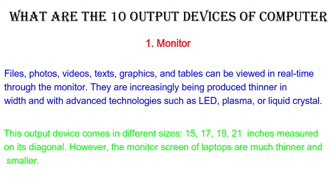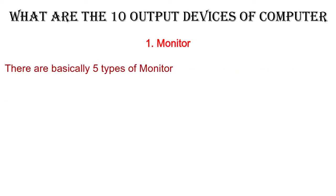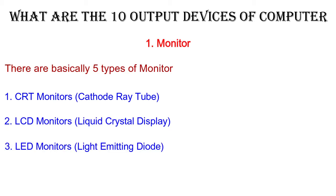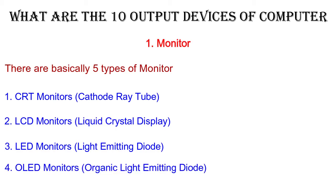The monitor screen of laptops is much thinner and smaller. There are basically 5 types of monitors: 1. CRT monitors (Cathode Ray Tube), 2. LCD monitors (Liquid Crystal Display), 3. LED monitors (Light Emitting Diode), 4. OLED monitors (Organic Light Emitting Diode), 5. Plasma monitors.